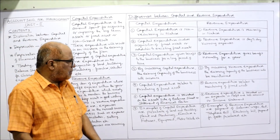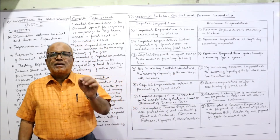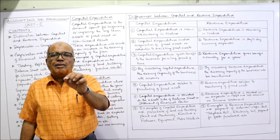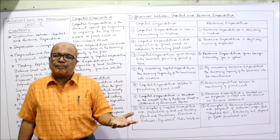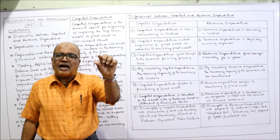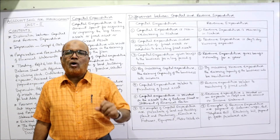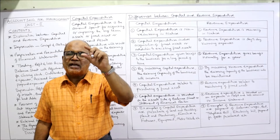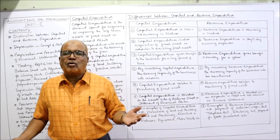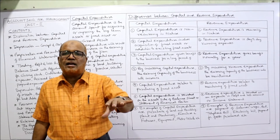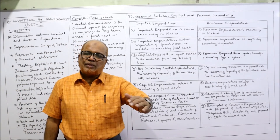Sixth difference: capital expenditure is recorded on the asset side of the balance sheet or statement of financial position. Revenue expenditure is taken on the debit side of the profit and loss account under expenses — also called the income statement. Simply put, capital expenditure goes to the balance sheet and revenue expenditure goes to the profit and loss account.